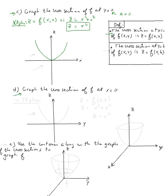For question D: graph the cross-section of f at x = 0. This time x = 0 and y varies, so z = f(0, y) = 0² + y² = y². Again it's a parabola, now in the yz-plane. These are the traces of the graph in the xz-plane and the yz-plane.